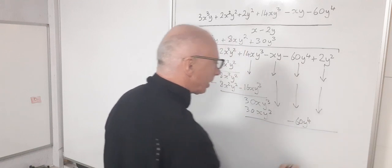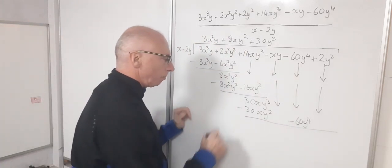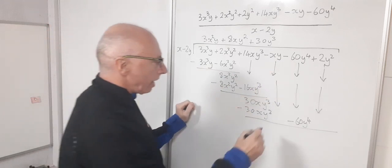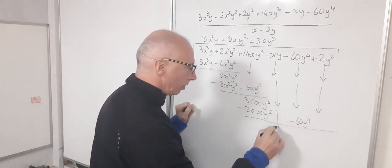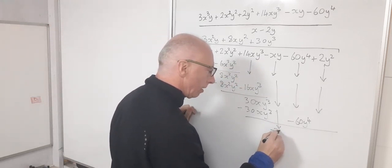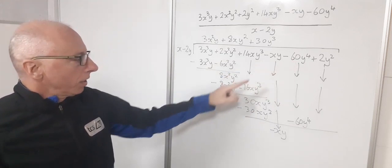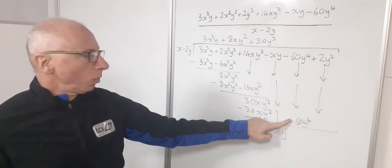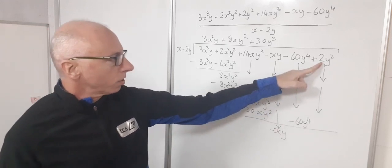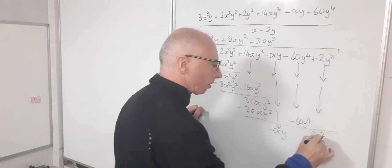And again subtracting these ones out. So that one minus that one cancels out. This one will carry down again. So I've now got minus xy, so I'm going to need to write that one in this time. Then I've got minus 60y to the 4 minus minus 60y to the 4, so they cancel out. And this time I've got 2y². So again I'm going to need to bring that one down as well. So now I've got 2y².